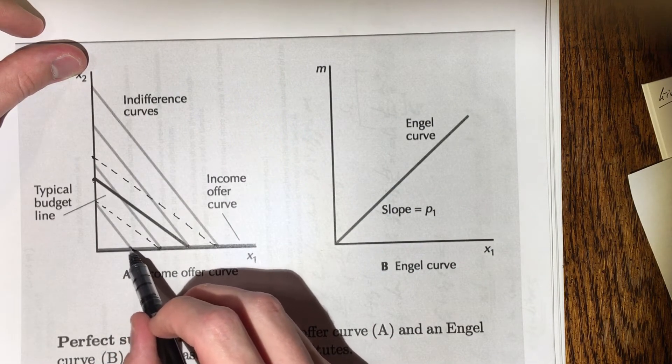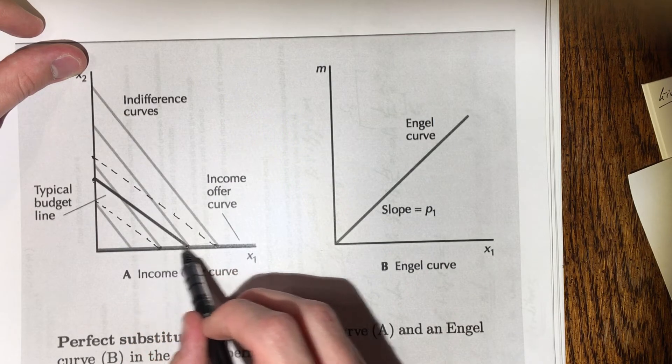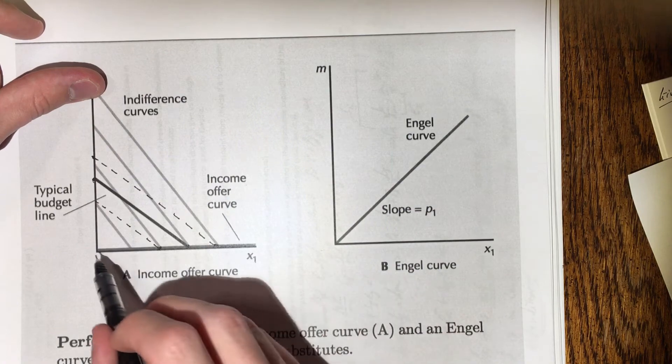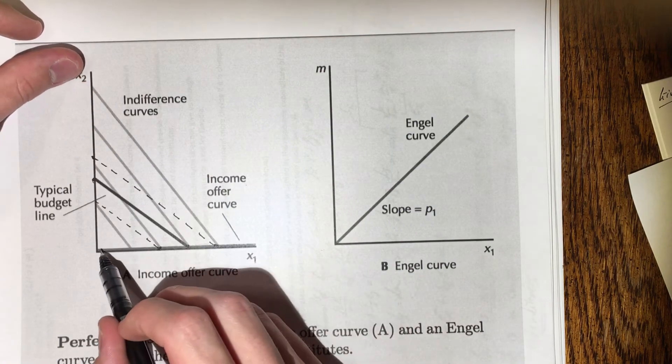And so if we trace all of those out with an income offer curve, we just get the x-axis, which is what's being depicted here.